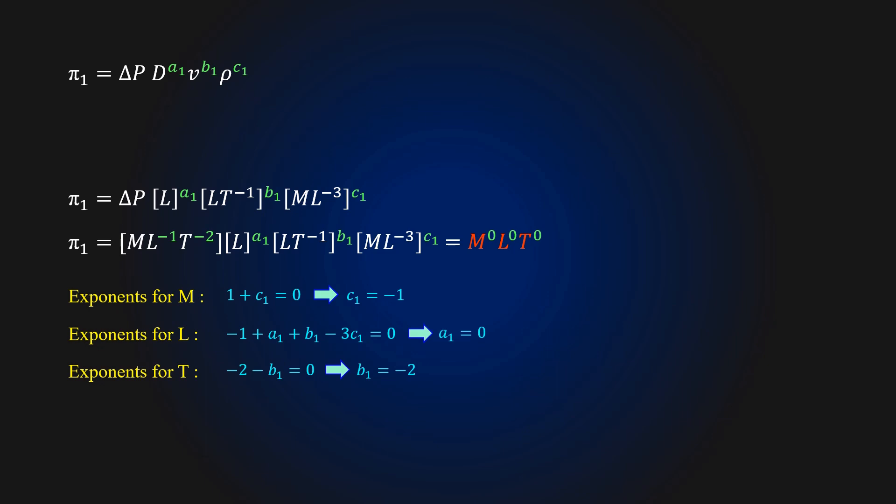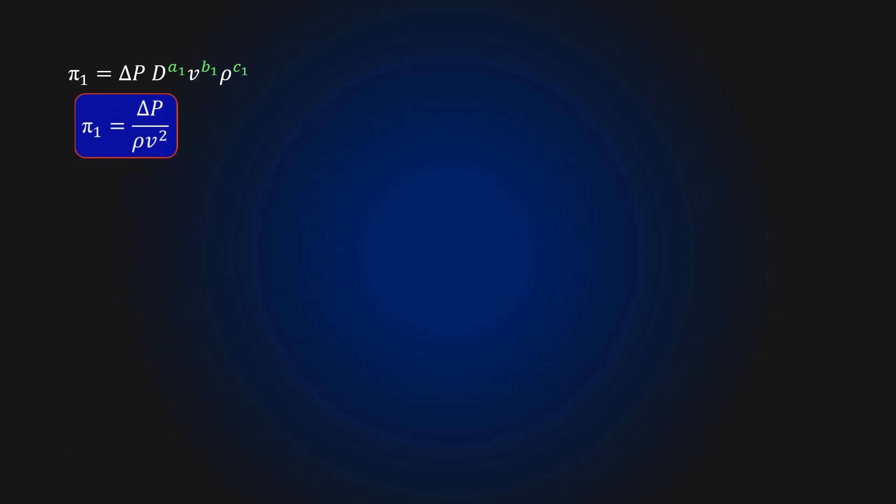Finally, we get the expression for pi1 as. In step six, we check that the pi1 is indeed dimensionless and finally ready to write the functional relationship between the non-dimensional parameters. Similarly, for pi2 expression,